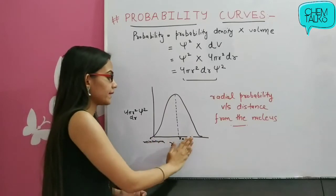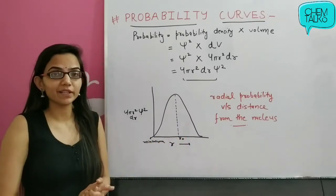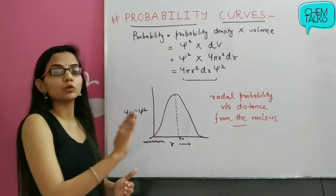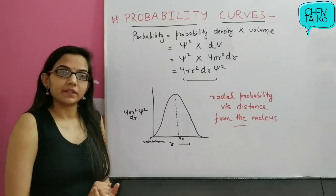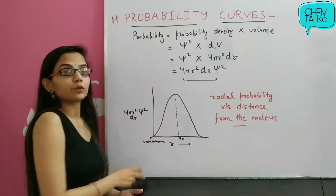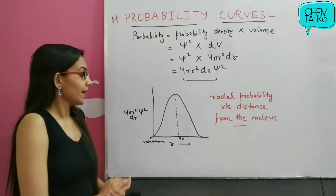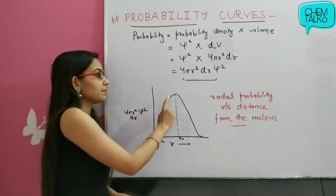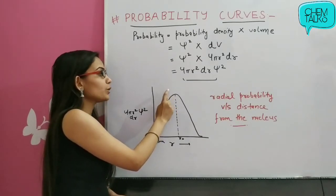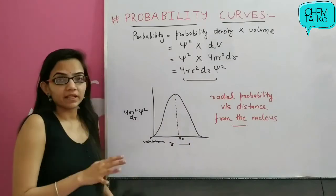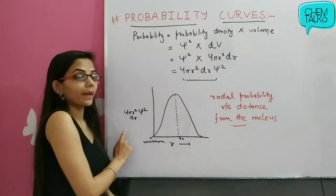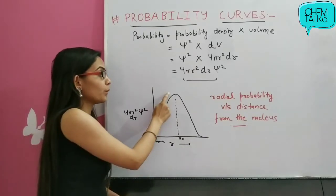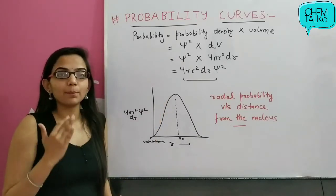As the radius increases, the volume term increases. But if we talk about probability density, as we move away from the nucleus, psi-square decreases. So when we take the product, the net result is that the probability density first increases, then we reach a maximum point — the peak point. After that, it decreases. We call this the high probability region or maximum probability region.